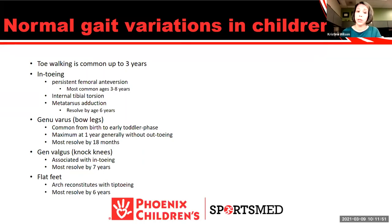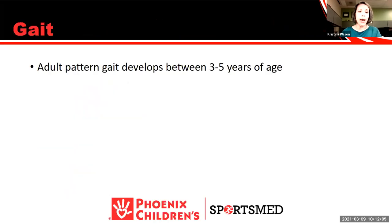Almost every child when they start to walk doesn't have an arch, and that's completely normal. By age 6 we usually start to see some arch develop. The adult pattern of gait typically develops between about 3 to 5 years of age, and many of these gait abnormalities resolve by about age 5.